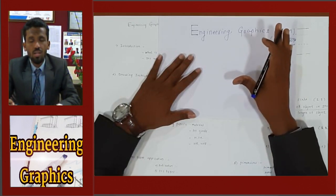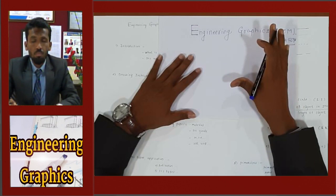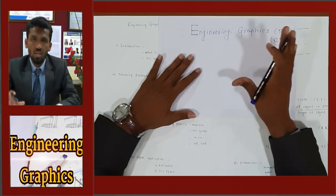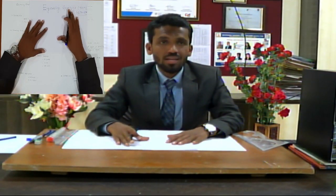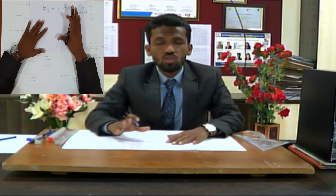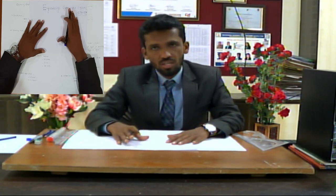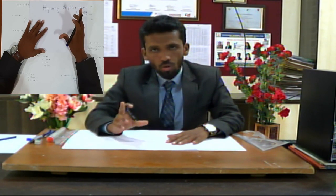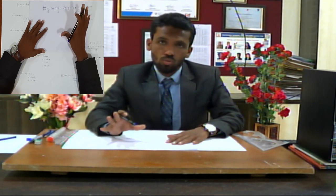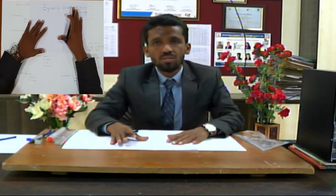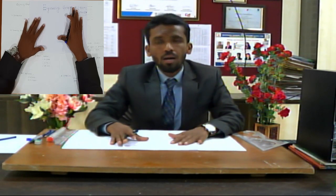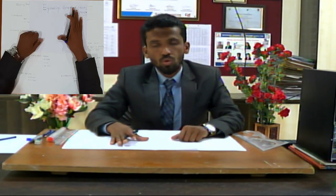In engineering graphics, there is no grammar as in spoken language. Instead, there are a number of rules, regulations, symbols, and guidelines. Simply put, engineering graphics is a language of engineers to communicate with each other or share ideas — that is known as engineering graphics or engineering drawing.